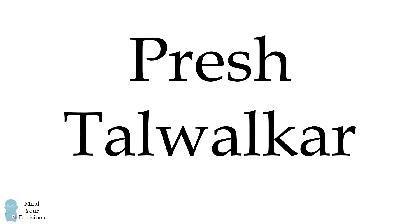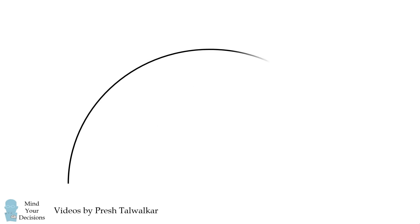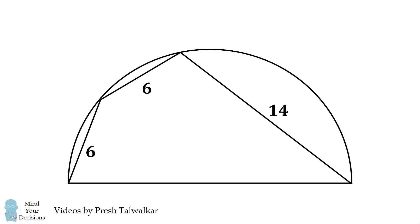Mind your decisions, I'm Presh Talwalkar. In a semicircle, draw a chord with a length of 6. Draw another chord with a length of 6 and a third chord with a length of 14. The question is to solve for the radius of the semicircle.